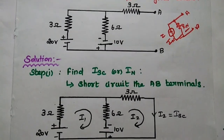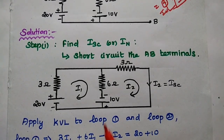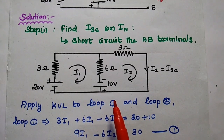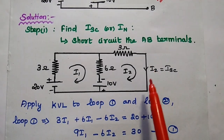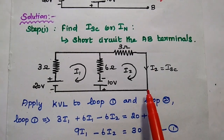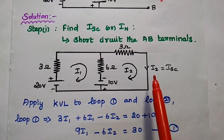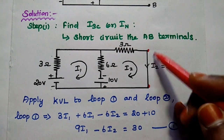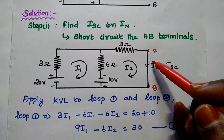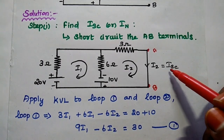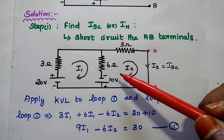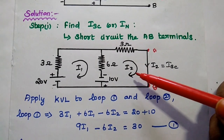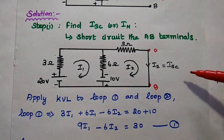In the solution, the first step is to find the short circuit current, that is Norton's current. To get this short circuit current, we short the given terminals AB. Since we are finding the Norton's equivalent circuit at terminals AB, we short circuit this branch and find the current through it — that is the short circuit current. The circuit has two loops: Loop 1 and Loop 2. The current I2 is the short circuit current.